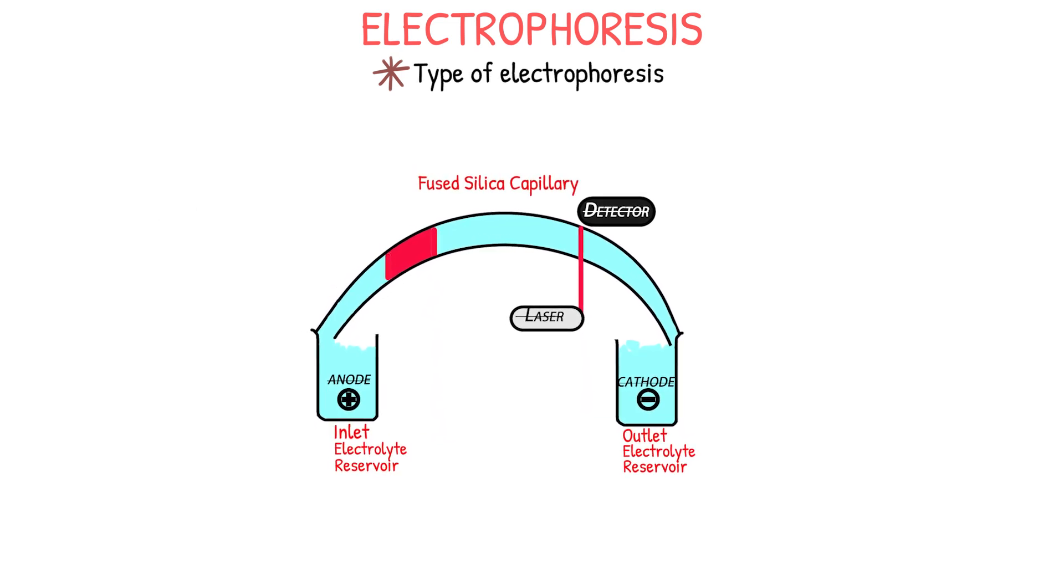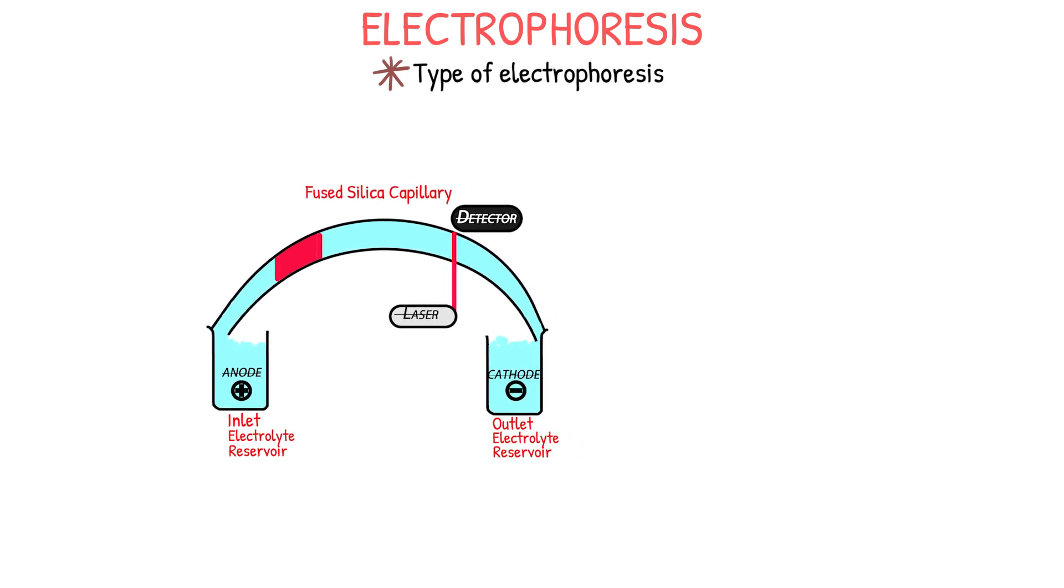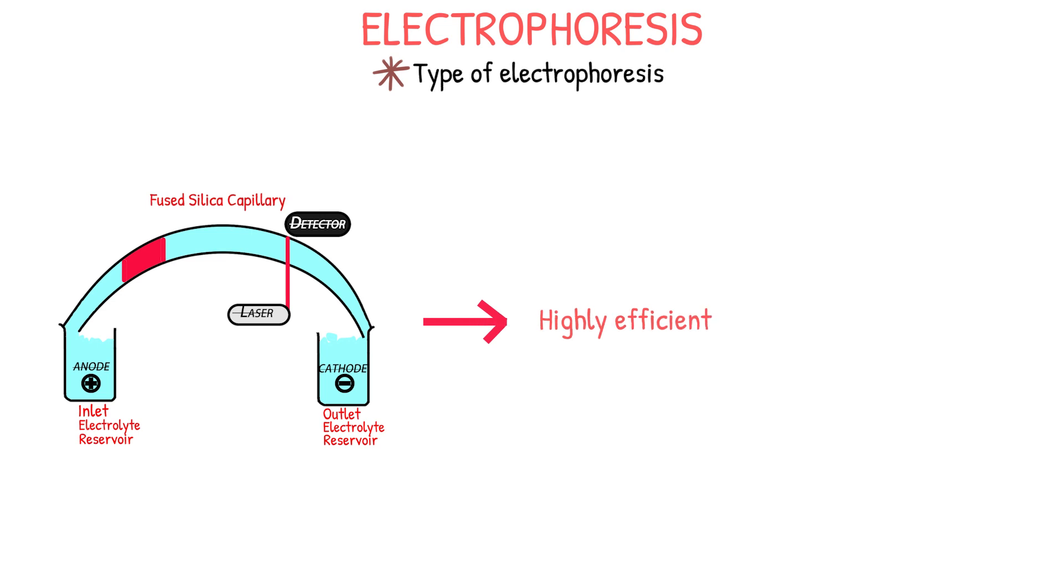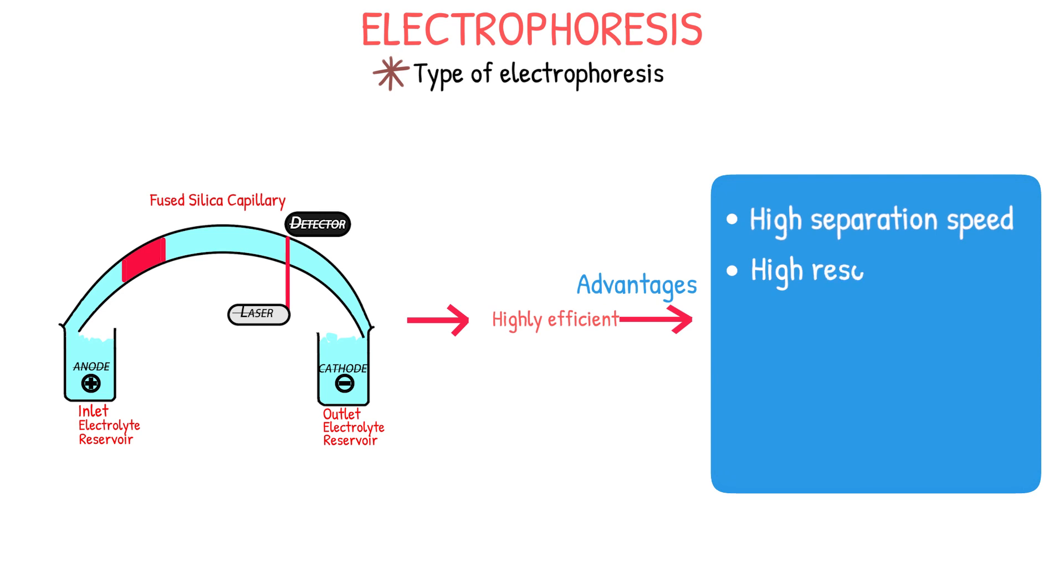Capillary electrophoresis, or CE, is a highly efficient technique used for separation and analysis of biomolecules based on differences in their charge and size. CE works by applying an electric field to a small capillary, which separates molecules in the sample based on their size and charge. The advantages of CE include high separation speed, high resolution, high sensitivity, low sample volume requirements, and automation. It can be applied to various types of molecules including proteins, nucleic acids, sugars, drugs, and organic molecules.